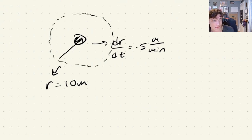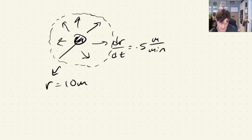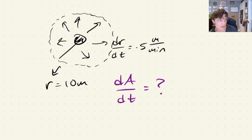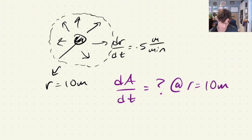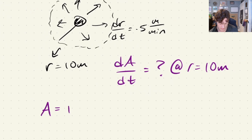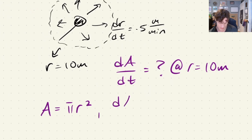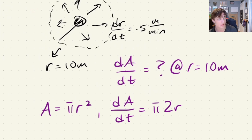The radius is expanding at a certain rate and we are asking about the change in area — what is dA/dt when r equals 10 m? The area of a perfectly circular oil spill is A equals π r squared. We differentiate this with respect to t: dA/dt equals π times 2r times dr/dt.